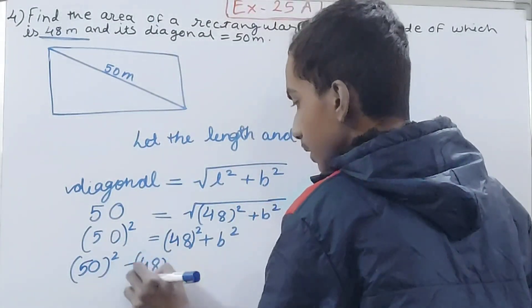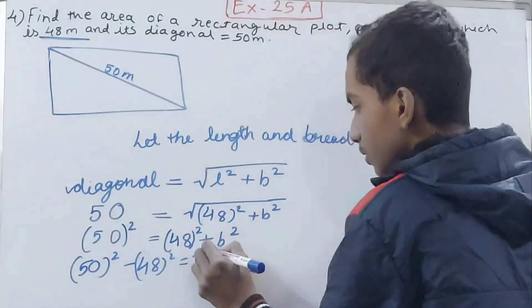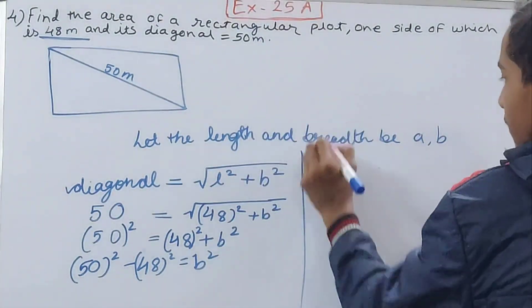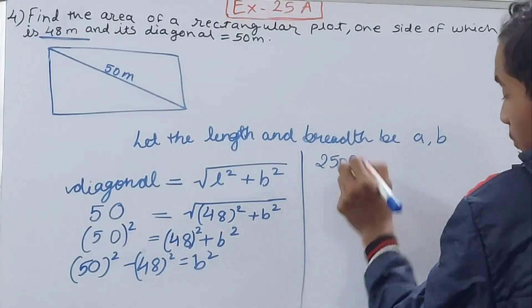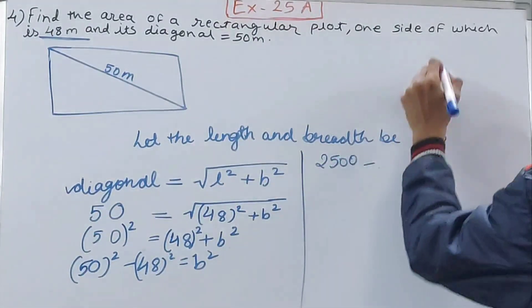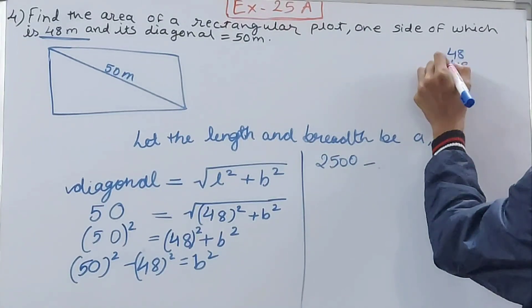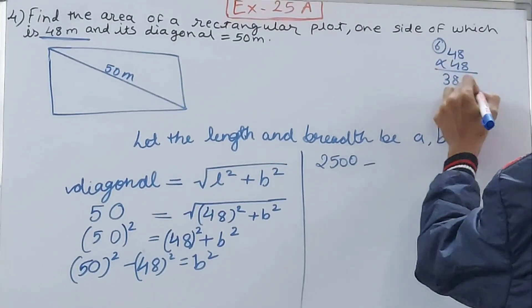So calculate it. See, 50² we all know that is 2500. Minus 48² we don't know, so let me just quickly multiply and see what do I get here.